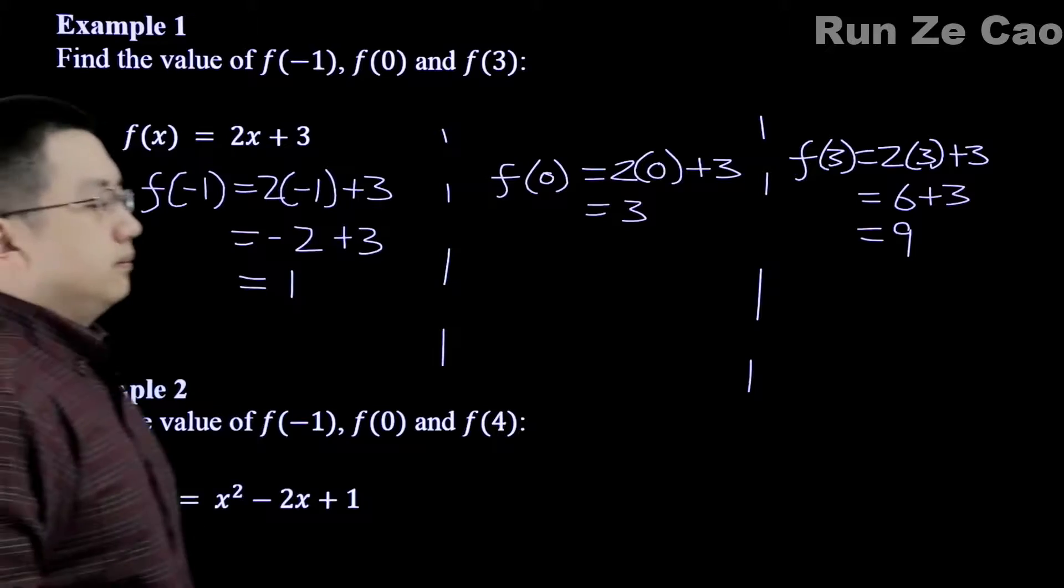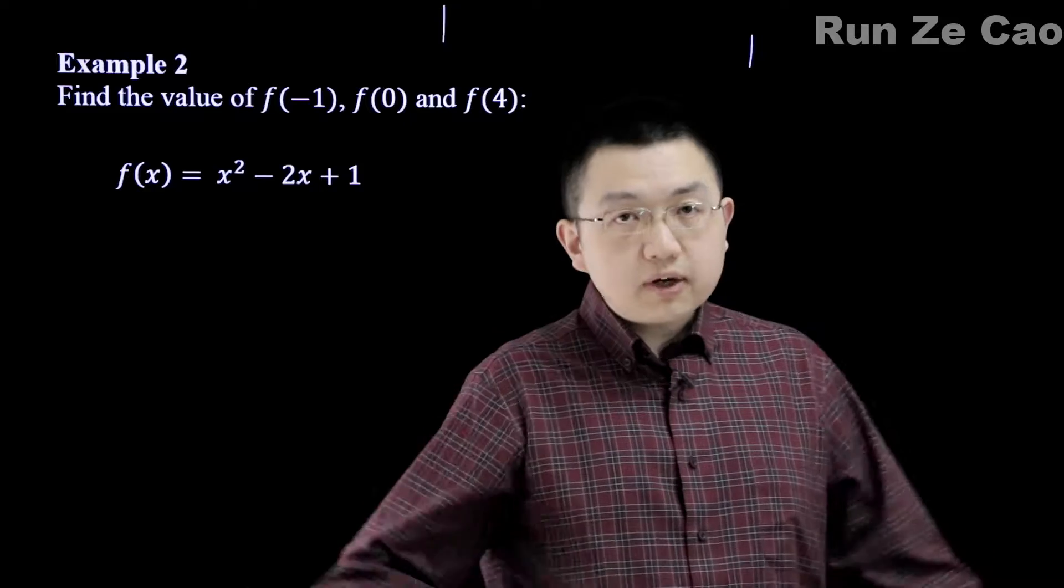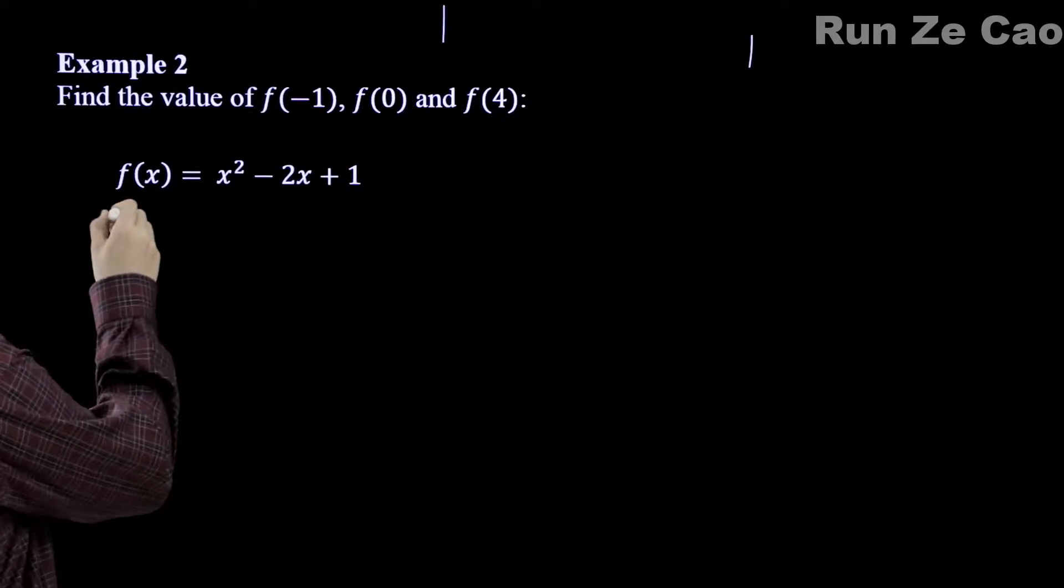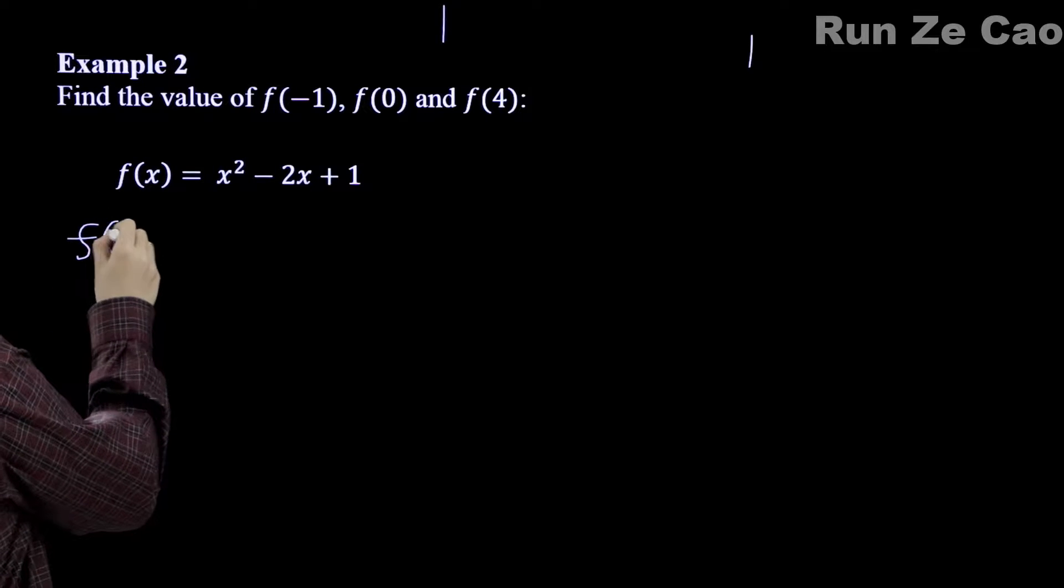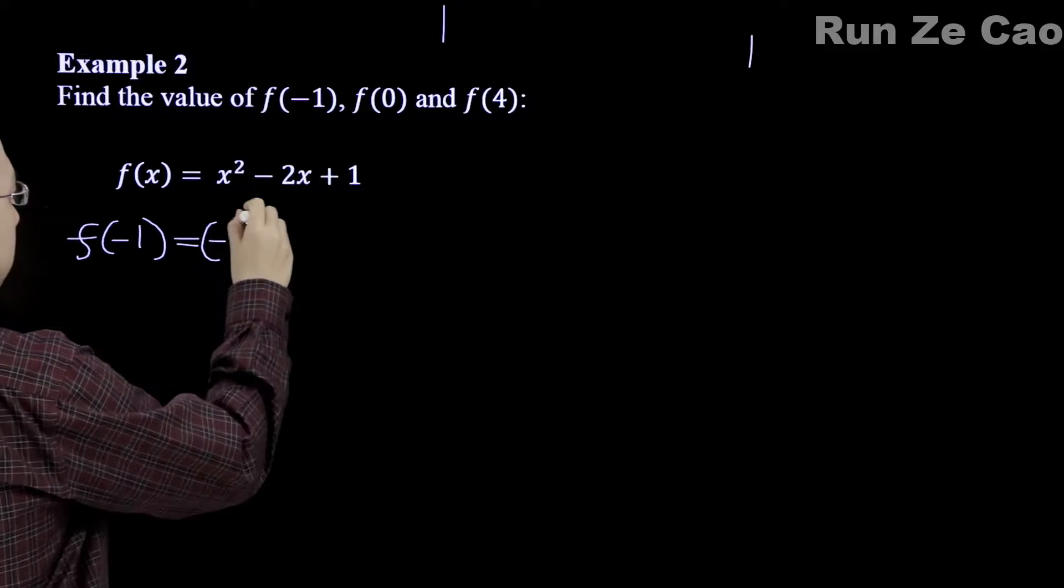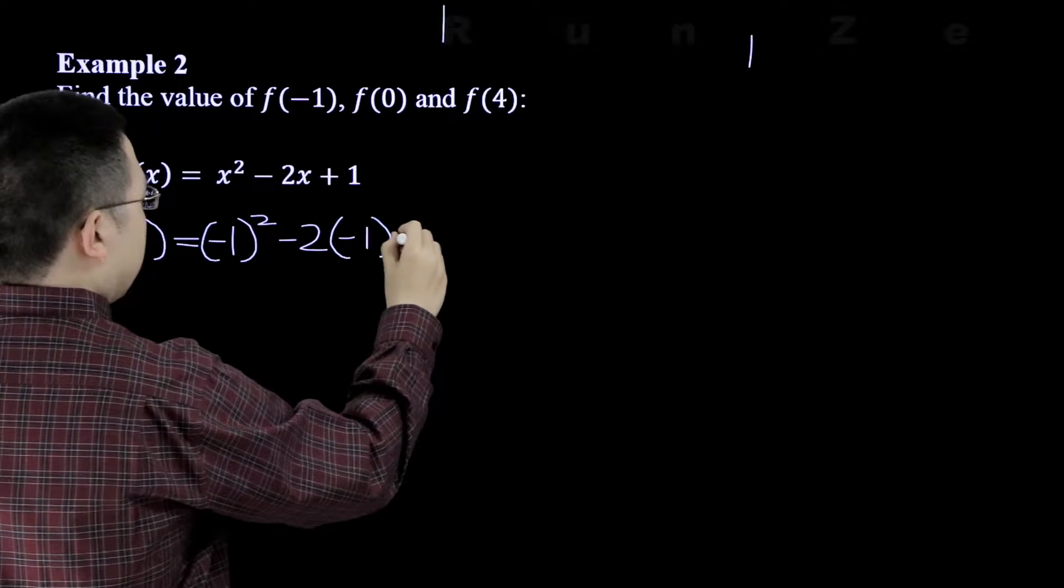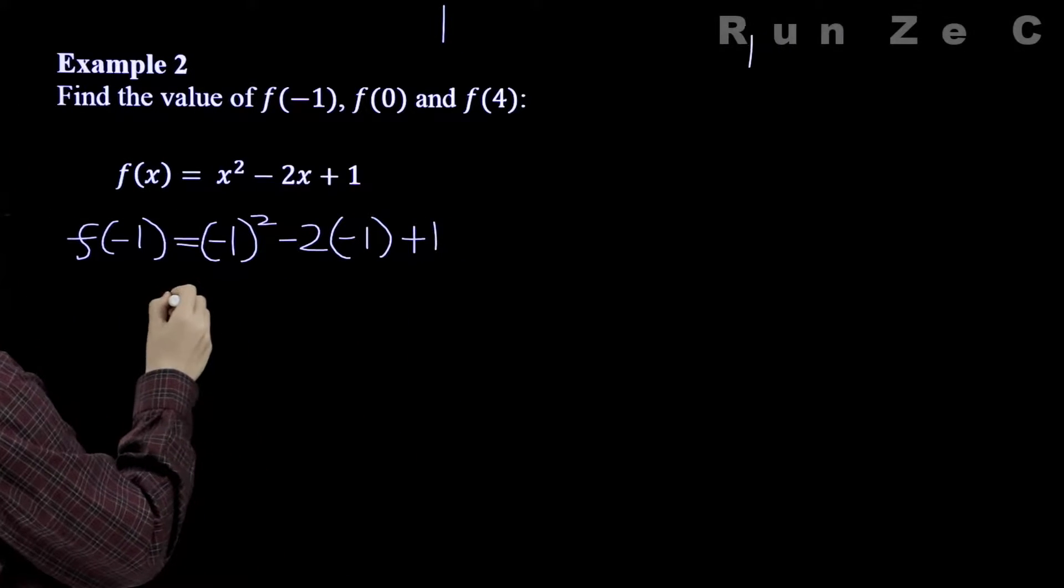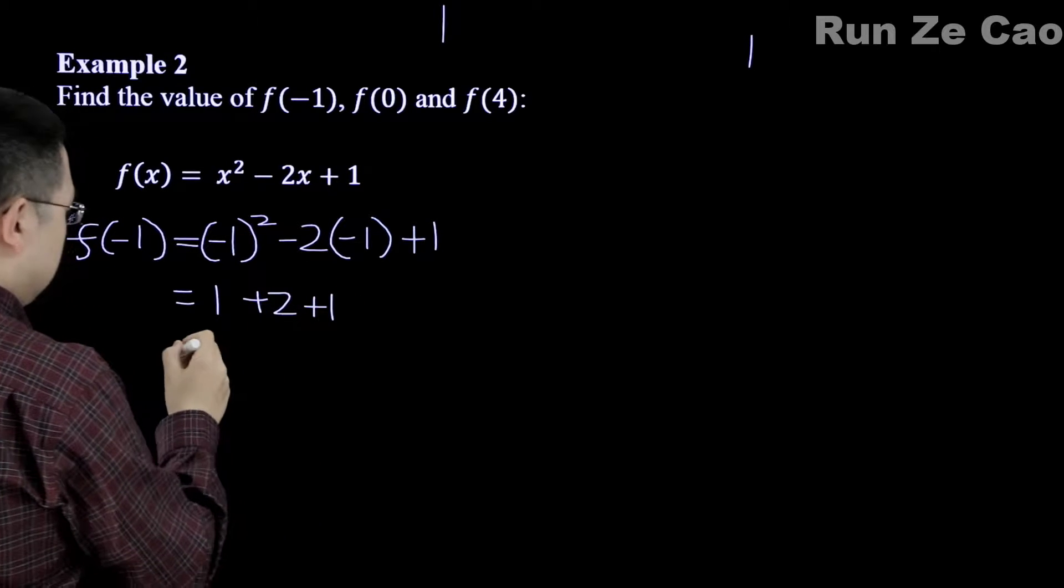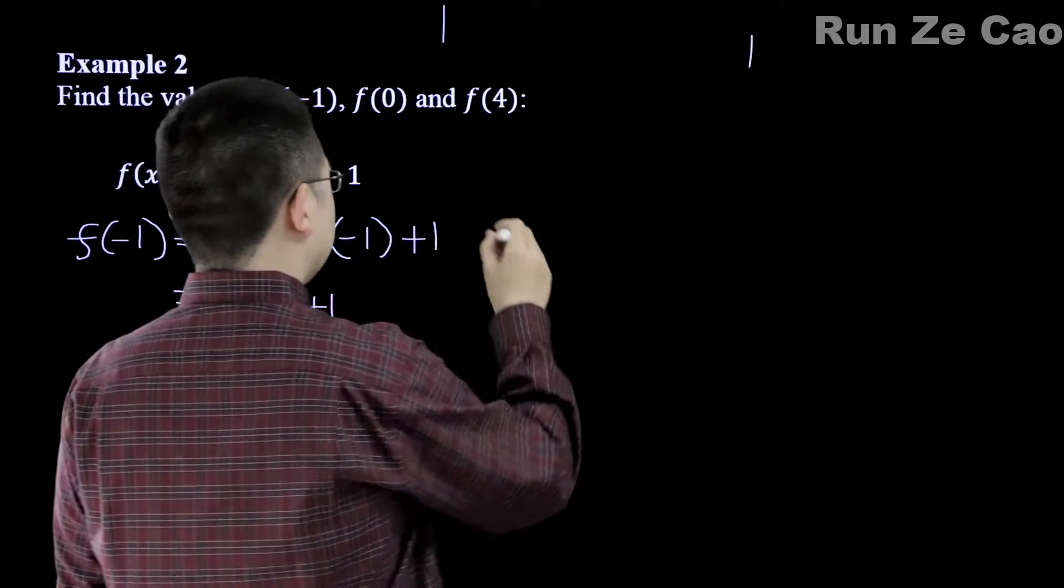And then there's f(3), which is equal to 2 times 3 plus 3 equals 6 plus 3 equals 9. Now, what about this example here? Similarly, we just substitute right in.